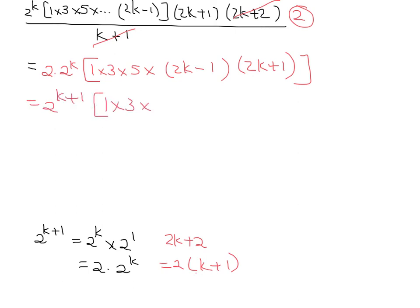So that's 1 by 3, which we have a dot, by 2k minus 1, 2k plus 1. And that equals the right-hand side.